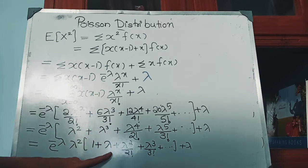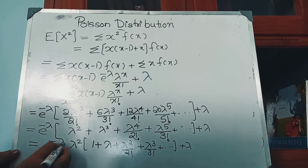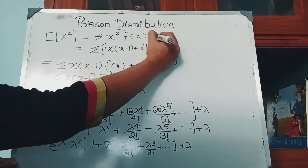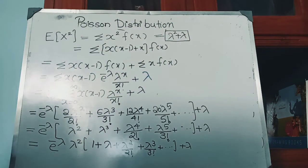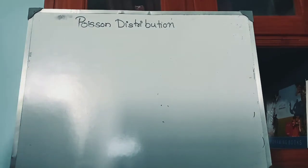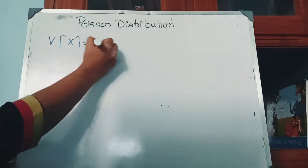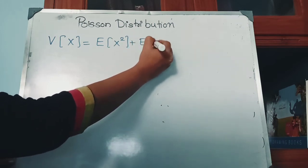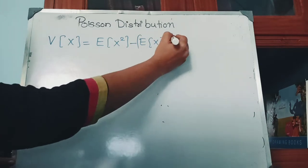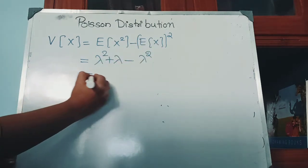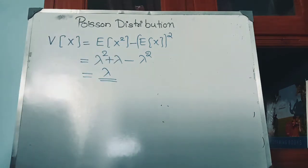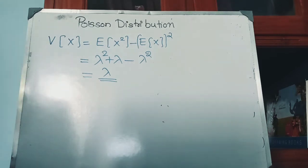The bracket is the expansion of e^λ, so e^(−λ) and e^λ cancel, giving E[X²] = λ² + λ. That is the second order moment of the Poisson distribution. Now, variance = E[X²] − (E[X])² = (λ² + λ) − λ² = λ. So for a Poisson distribution with parameter λ, the mean and variance are both equal to λ.